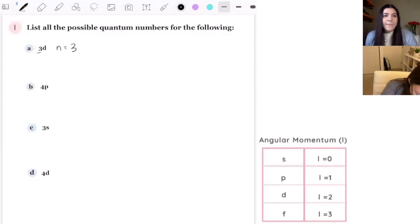Then we do l and l is 2. m sub l is going to be like our variations, right? So negative 2, negative 1, 0, 1, 2, and then m sub s is just going to be plus or minus 1 half. Perfect.